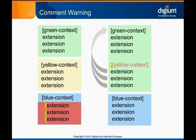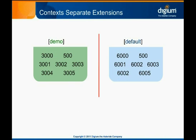It doesn't hurt anything to have a context declared that has no extensions in it. Block commenting a context name and all of its extensions is another way to troubleshoot the dial plan without inadvertently putting extensions into an undesired context. That covers most of the syntax you'll need to know to use contexts effectively. Let's look now at how contexts are used. At a basic level, they are a tool to separate groups of extensions.